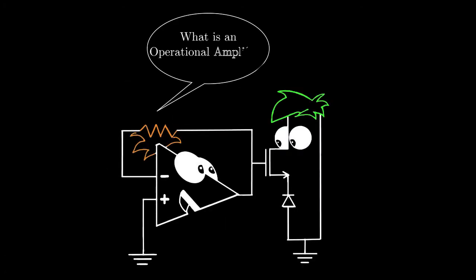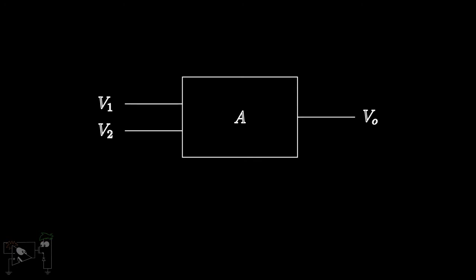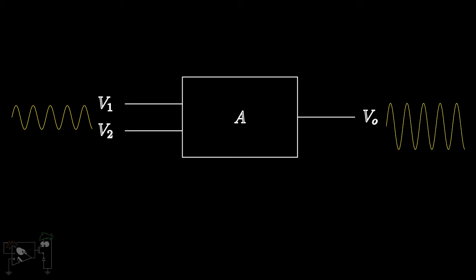Now, what is an operational amplifier? It's basically just a high-gain differential amplifier, meaning that instead of taking the input voltage with respect to the ground potential, we measure it with respect to another signal. So naturally, an op-amp has two input terminals instead of one. If I feed signals V1 and V2 into the inputs of the op-amp, then I will get an output which amplifies the difference between V1 and V2. Put mathematically, V0 is equal to A times (V1 minus V2), where A is the gain of the op-amp.